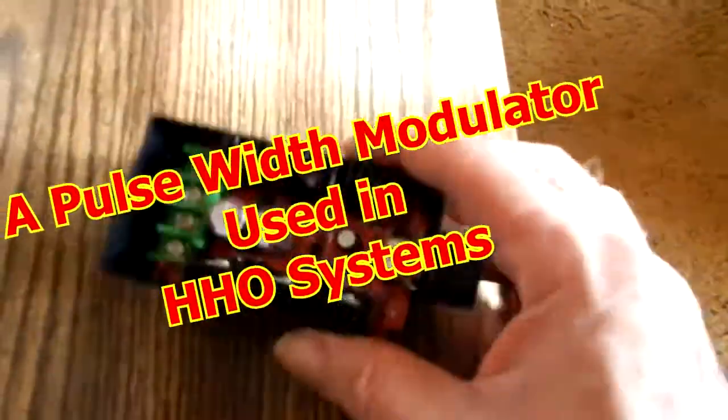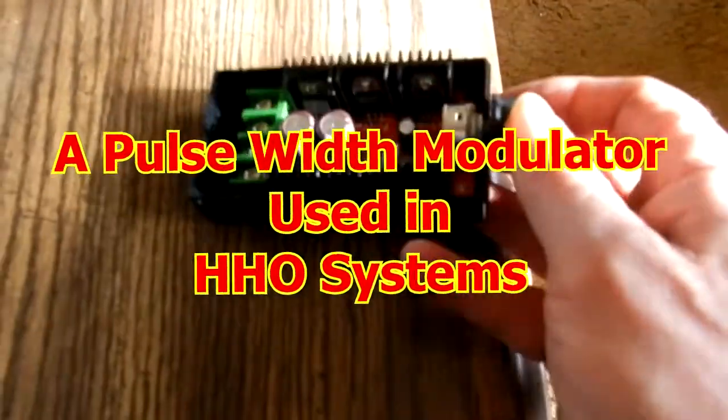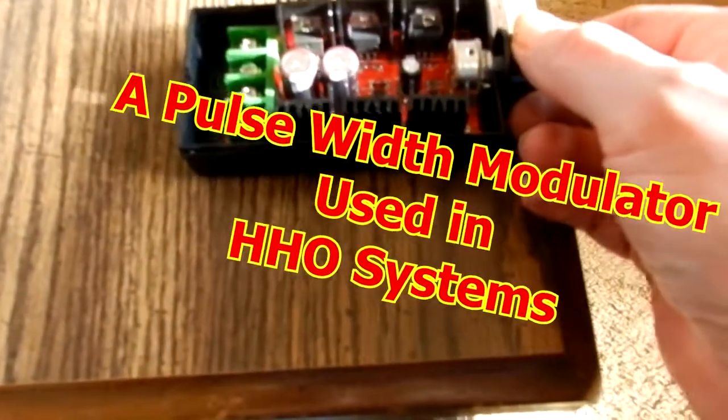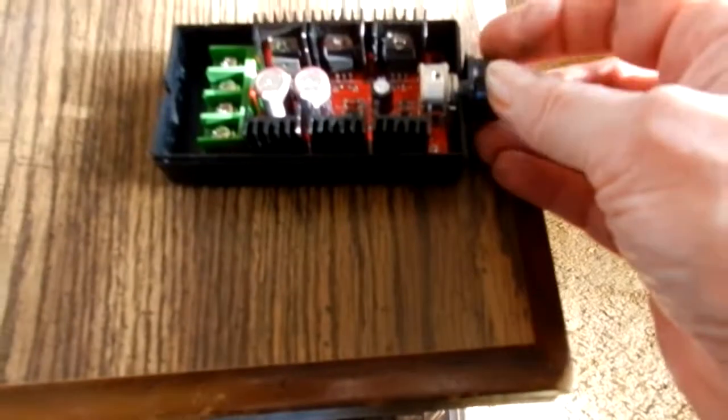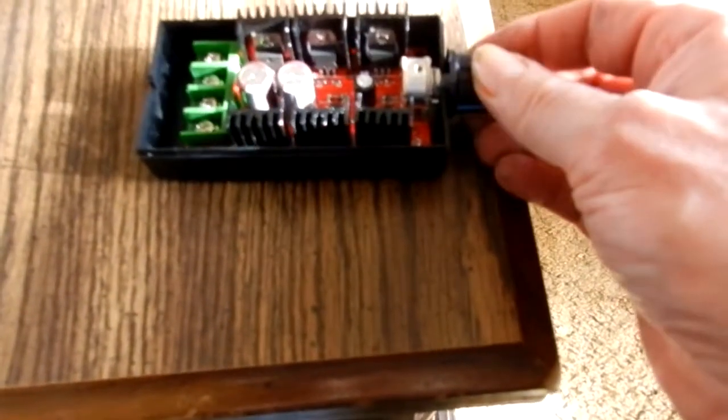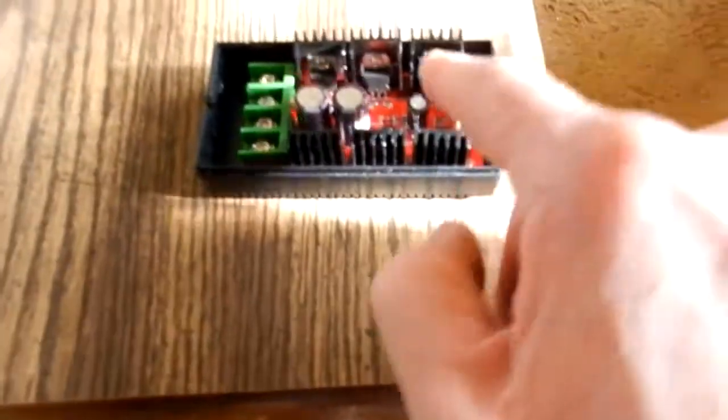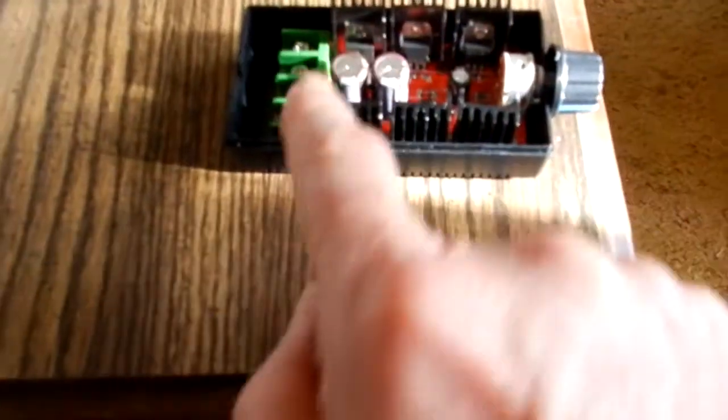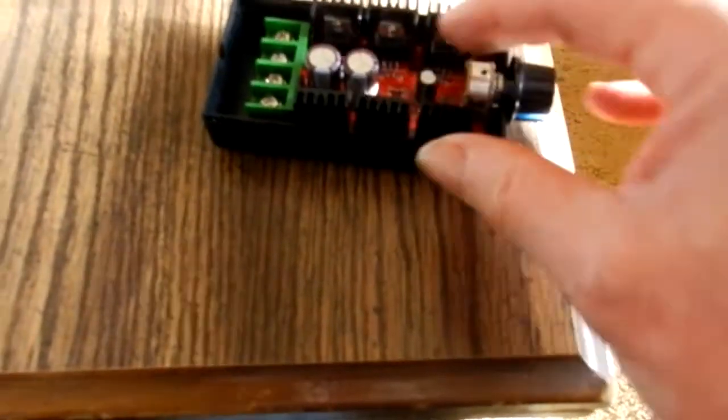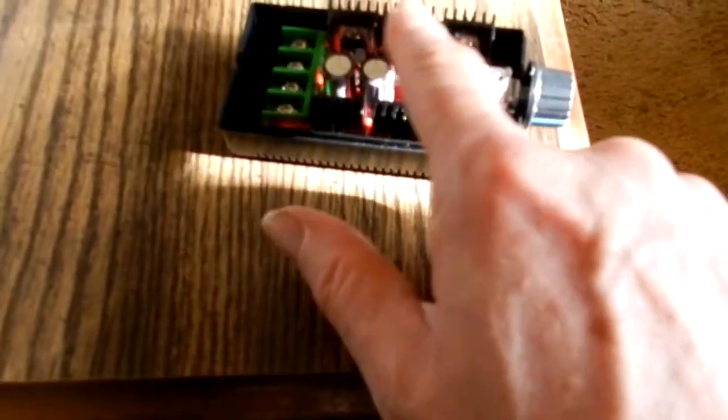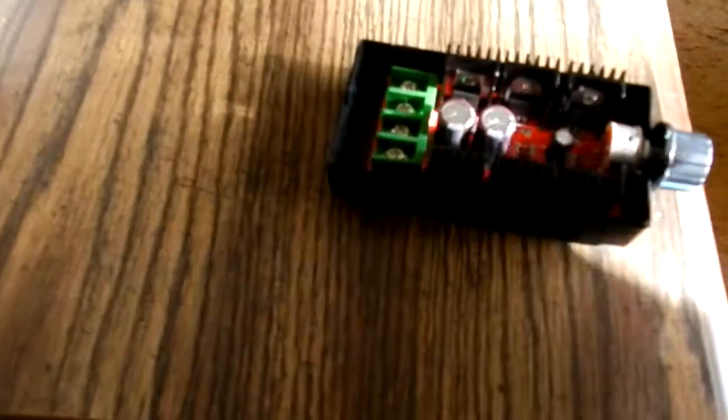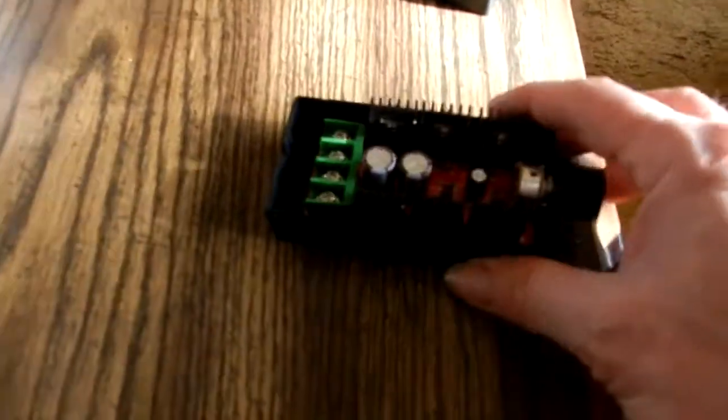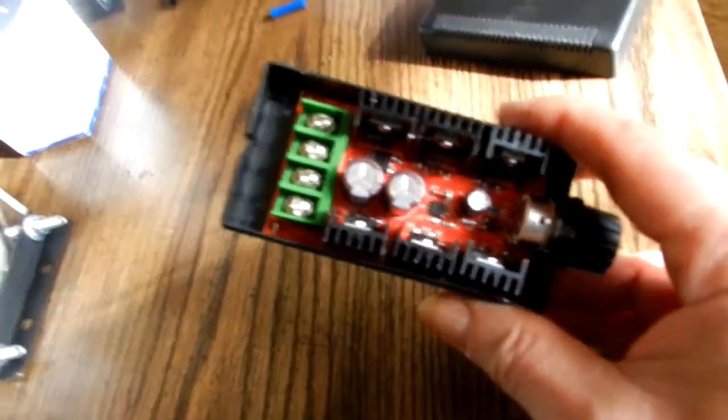Now let's take a look at the pulse width modulator. It has an on-off switch right here and a volume control - it's a potentiometer with a switch. The on-off switch has six, these might be MOSFETs or they might be just transistors. And this is where you hook everything up - filter capacitors. This is a pulse width modulator.